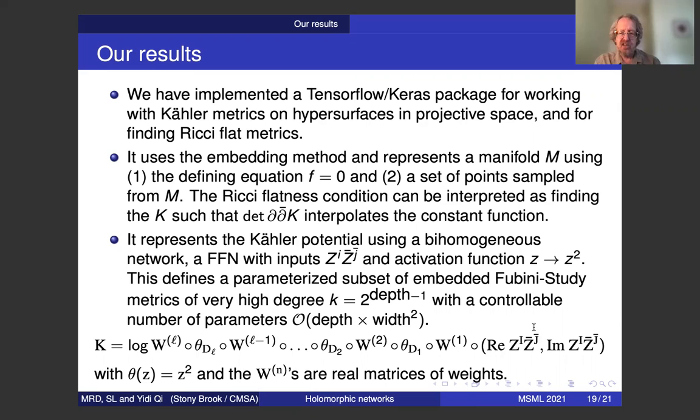What was the really new point of our work? It was to introduce neural networks that produce subsets of the general metric ansatz with many fewer and a controllable number of parameters. The most successful one was what we call the bi-homogeneous network, where the inputs are the real imaginary parts of combinations of Z and Z bar. We then feed those through alternating linear transformation and activation function, which is just squaring the element. The output of such a network is, again, a homogeneous polynomial of potentially very high degree, exponential, two to the depth of the network minus one, but with many fewer parameters than K to the dimension, a controllable number of depth times width squared.